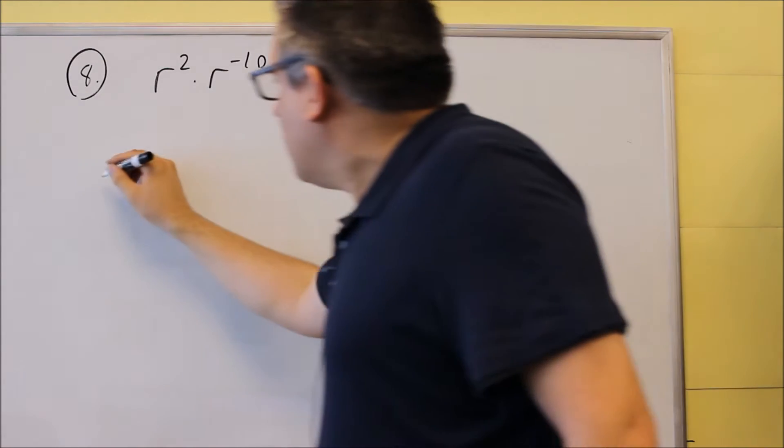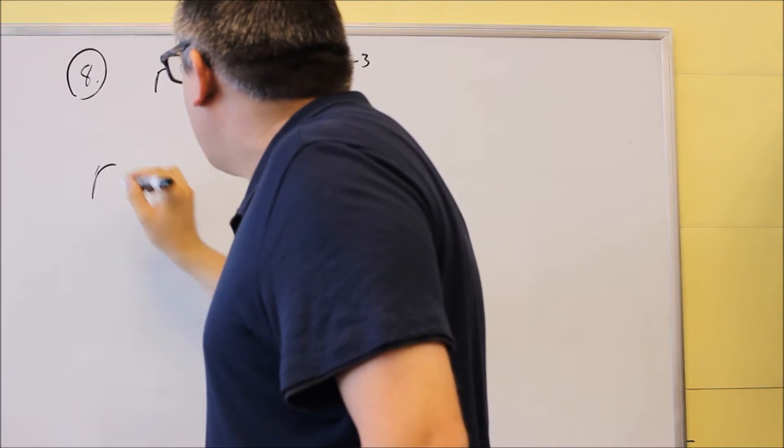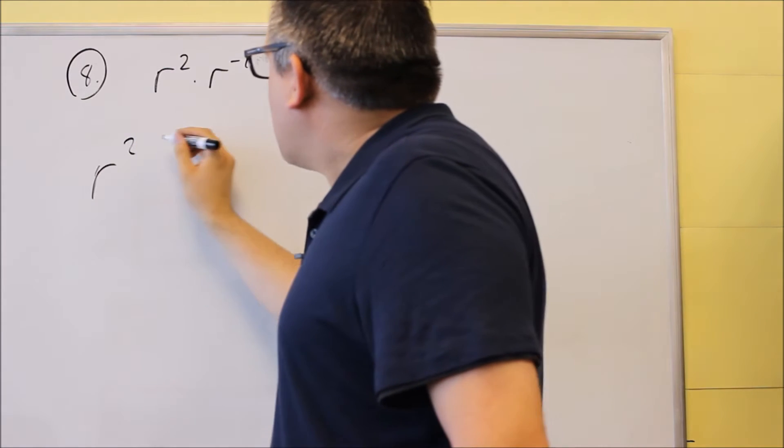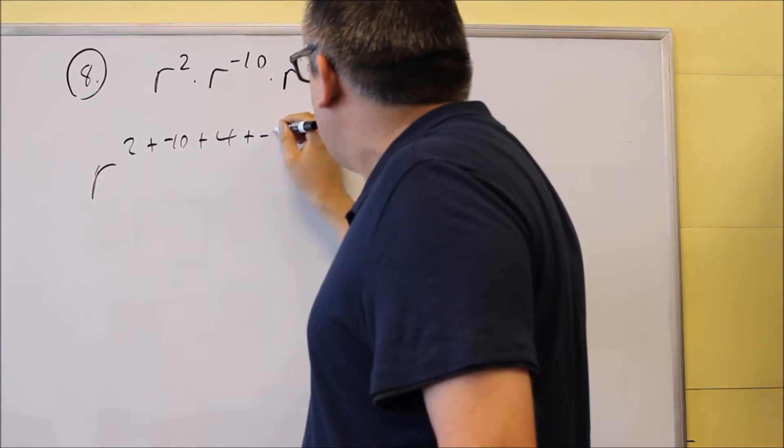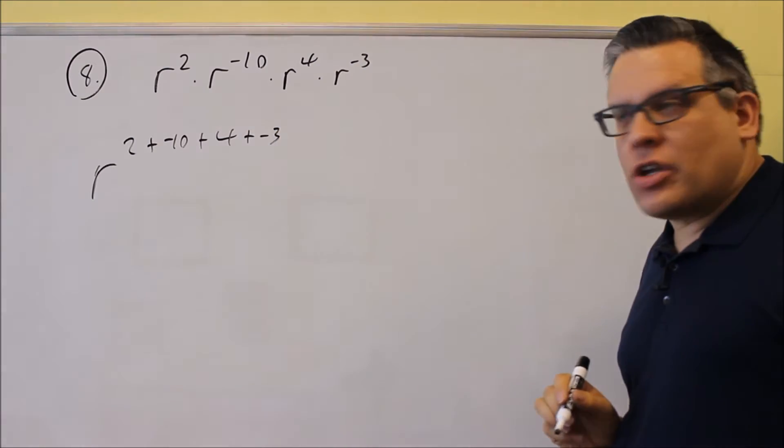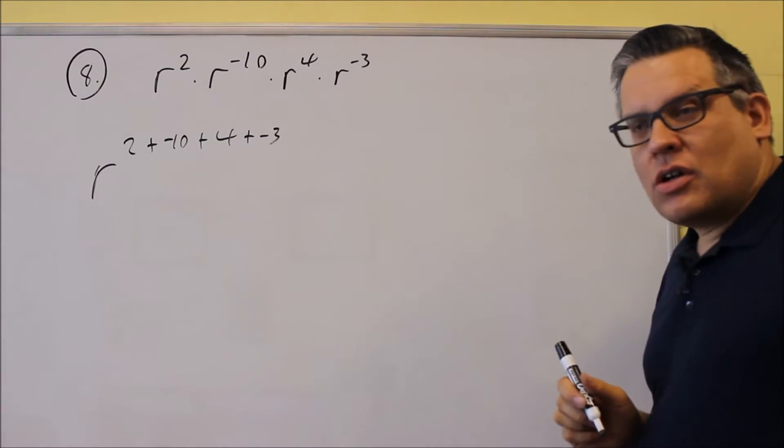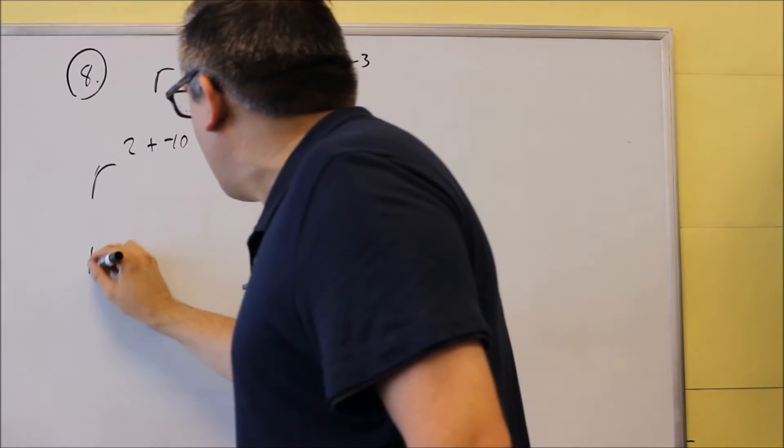So let's go ahead and combine this into a single exponent. So I have my r. Now I'm going to take 2 plus negative 10 plus 4 plus negative 3. I'm adding all those together. It's adding all the exponents. We're going to combine all this and simplify it.